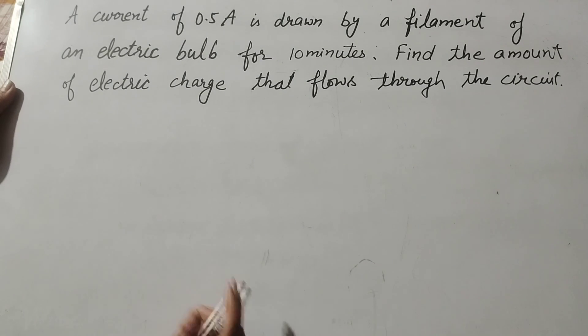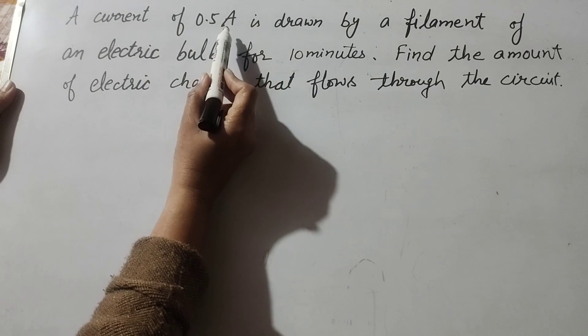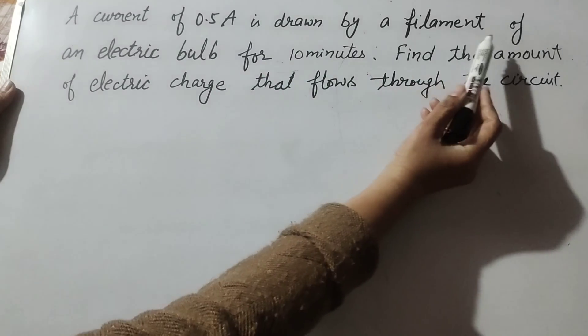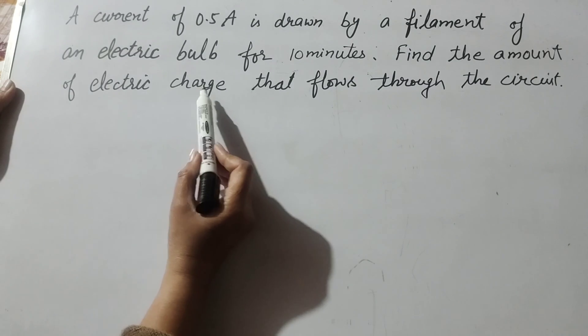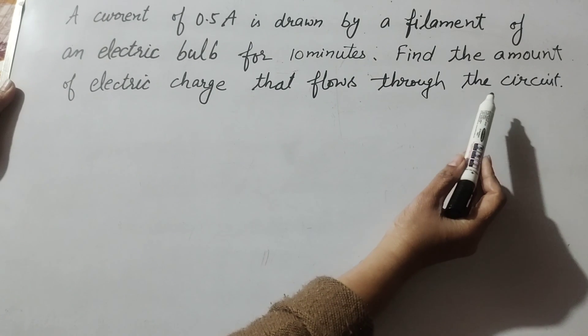Hello friends, welcome to my channel. In this video, we discuss a current of 0.5 ampere is drawn by a filament of an electric bulb for 10 minutes. Find the amount of electric charge that flows through the circuit.